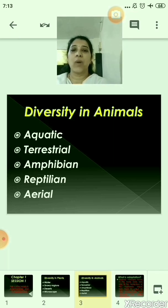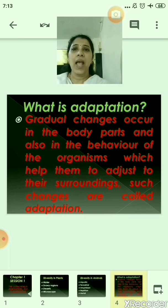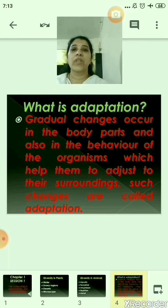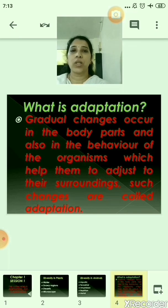Now we will see the definition of adaptation. Gradual changes occur in the body parts and also in the behavior of organisms which help them to adjust to their surroundings — such changes are called adaptation. If you are asked the definition of adaptation, you will write: gradual changes occur in the body parts and also in the behavior of the organisms which help them to adjust to their surroundings, and such changes are called adaptation.